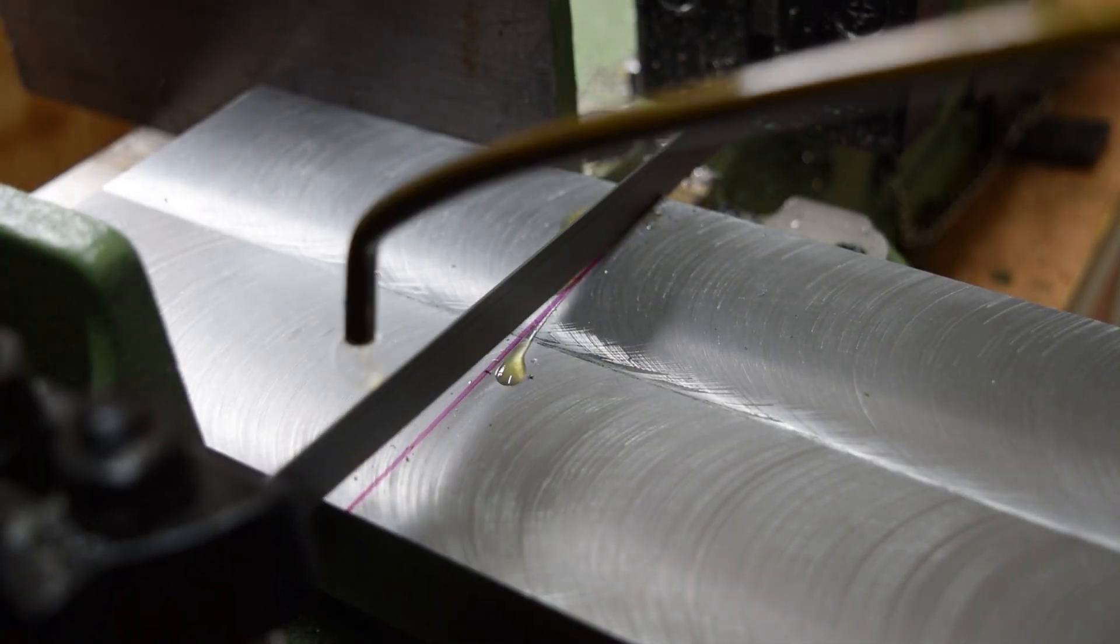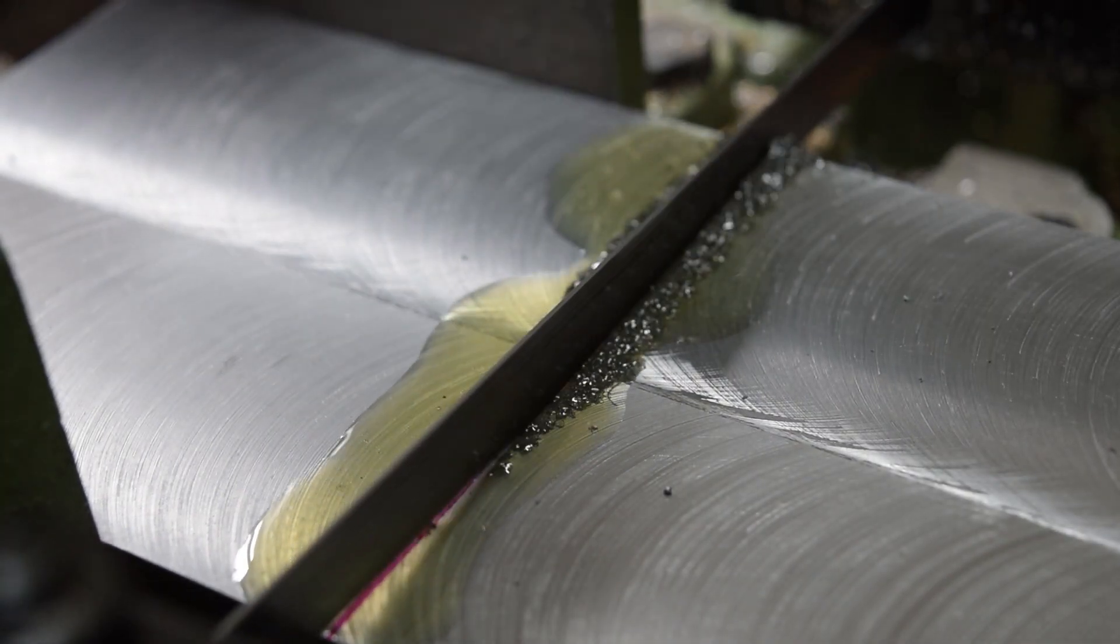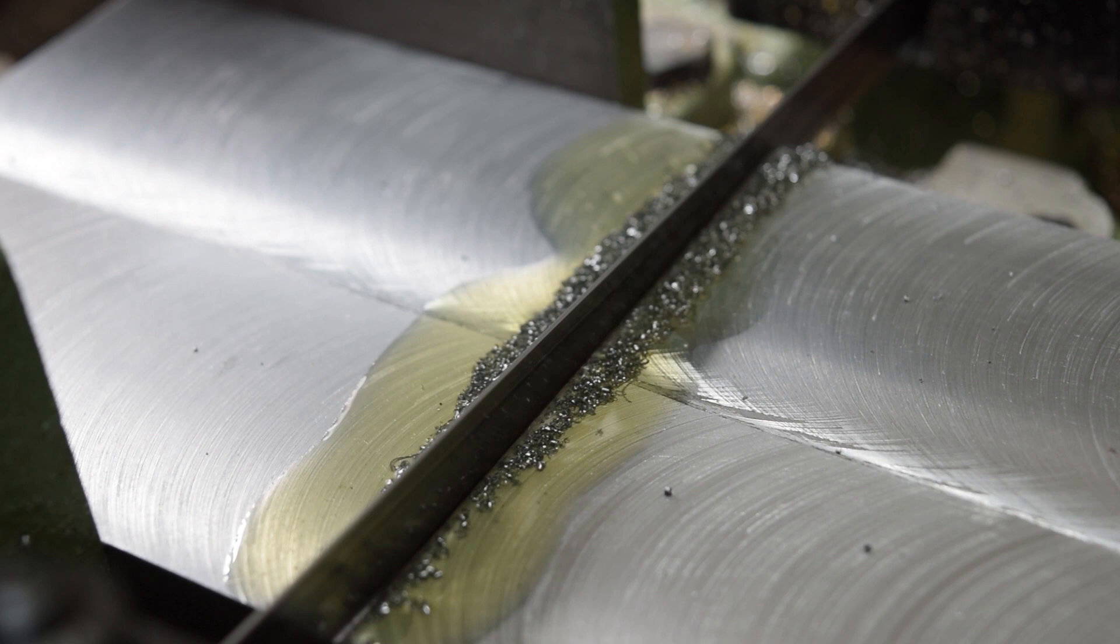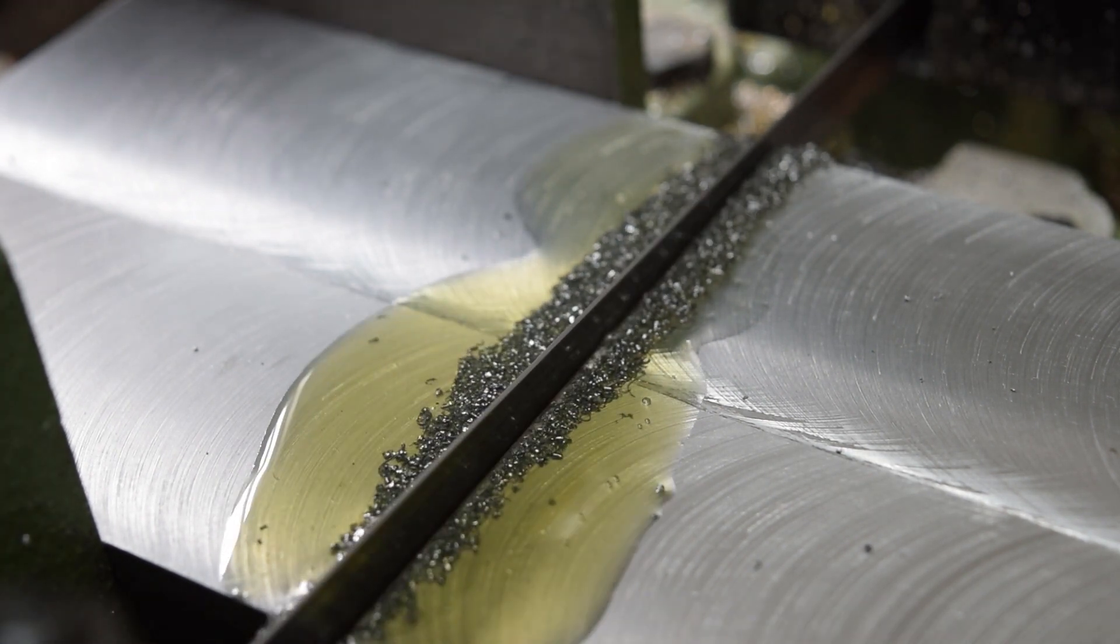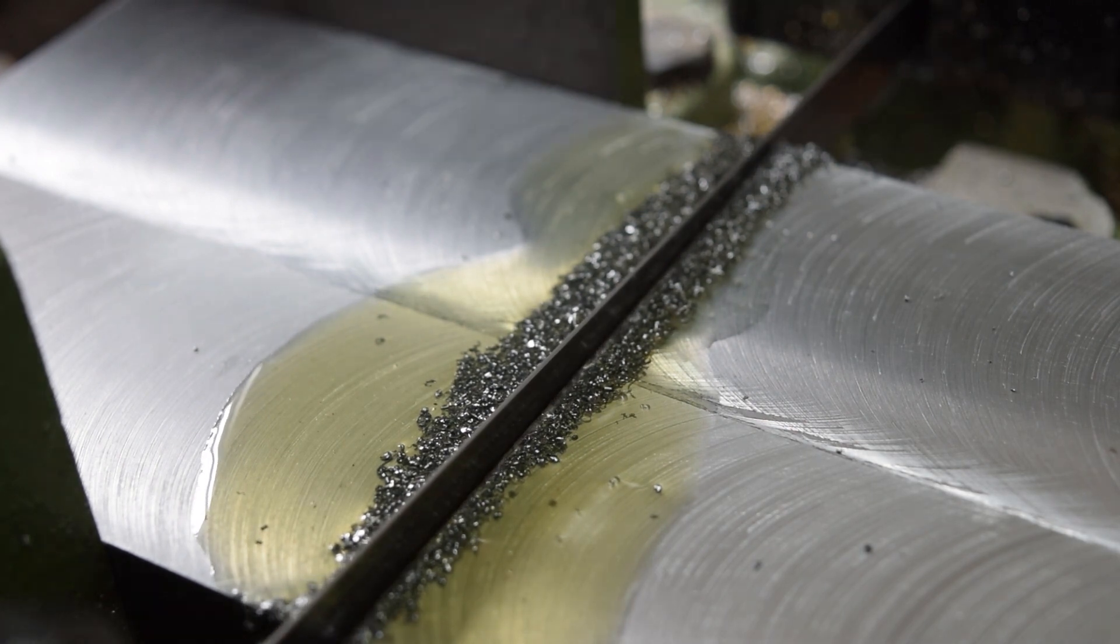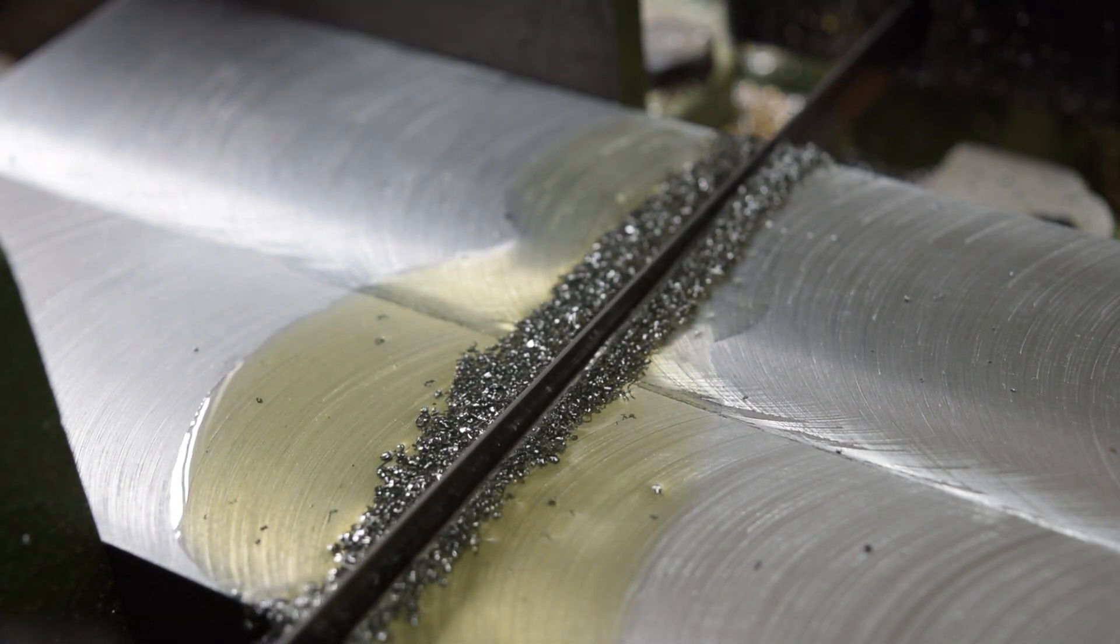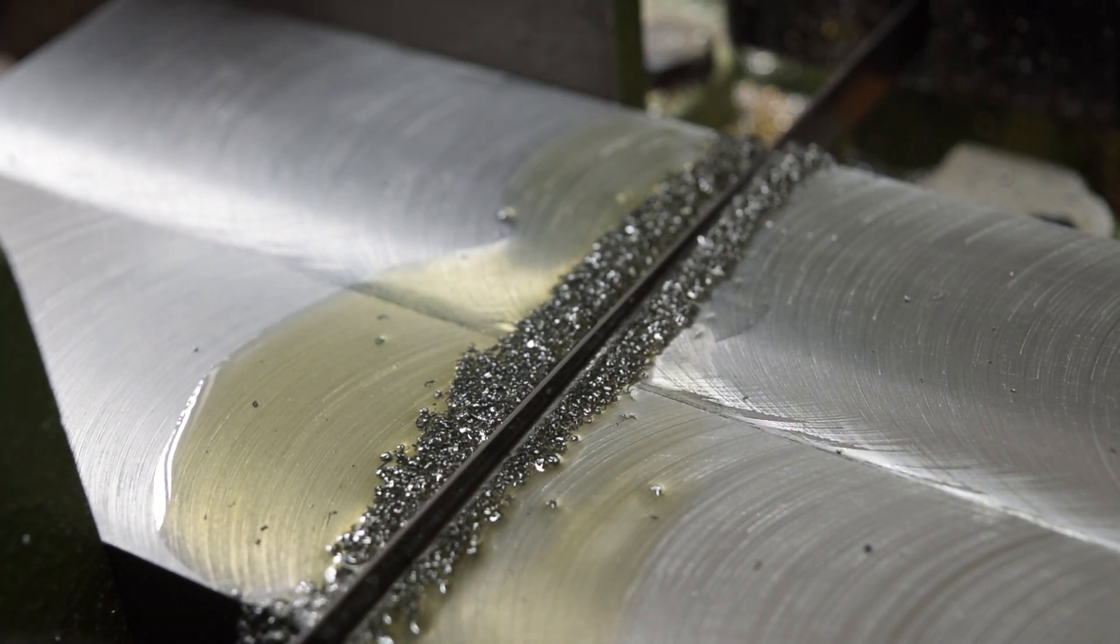Once I had fly cut both sides of this piece of mild steel, bright mild steel, I attempted to use the bandsaw to cut it off into two equal parts. One will become the top and the other will become the bottom part of the toolpost mount.